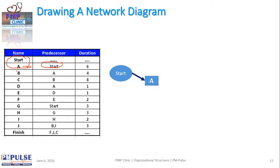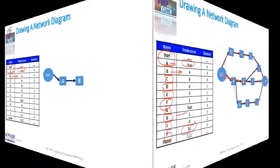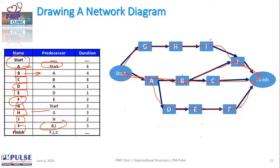There's another activity called B, and B actually happens after A because B's predecessor is A. It means that immediately after A you would have another node called B. So we've started making the network diagram. That's how an entire network diagram is made.